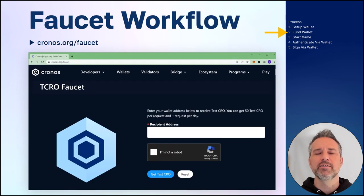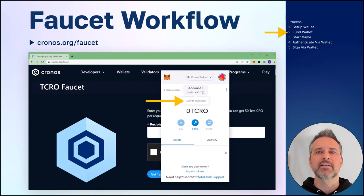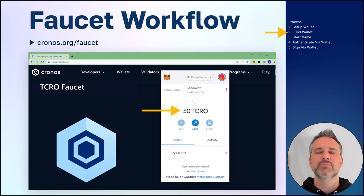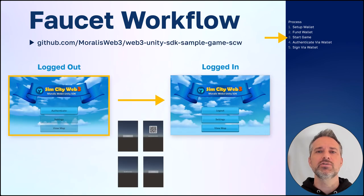Next, let's fund the wallet. Go to kronos.org/faucet. Click on the Metamask extension in your Chrome browser to open up Metamask. With the Kronos testnet enabled there, you'll copy the public address. Paste that into the faucet, and within a minute or two, you have the funds ready for testing.